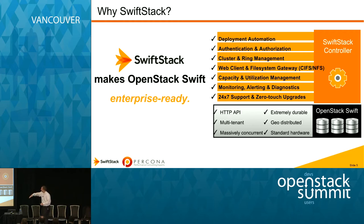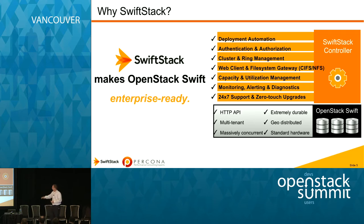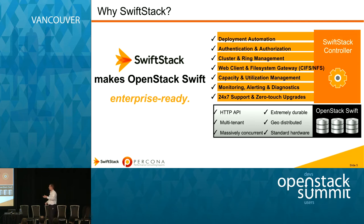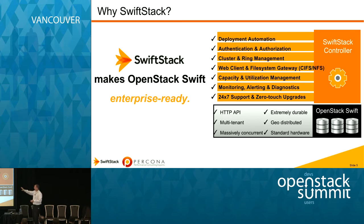What we do is add pieces on top of that which are more or less required in the enterprise space. We provide support, and our SwiftStack controller is a management tool that provides simplified deployment, management, monitoring, integration with LDAP authentication, Nagios, and Zabbix. We also provide a file system gateway — so if you have applications that don't yet talk to a RESTful API but know NFS or CIFS, you can go through a gateway to get your data into a Swift cluster.